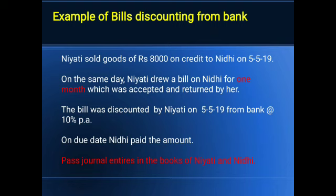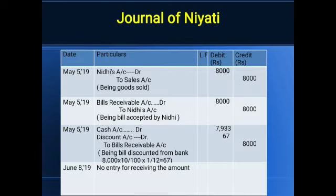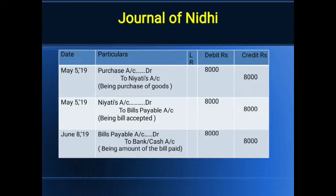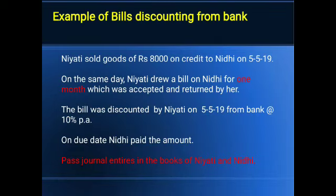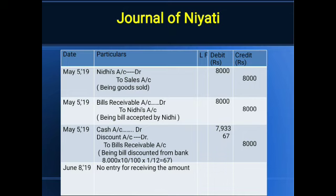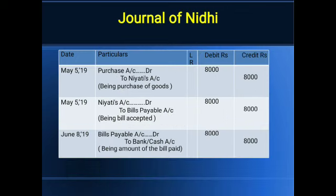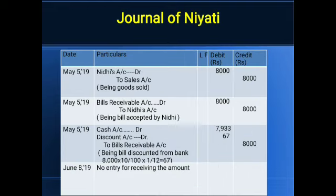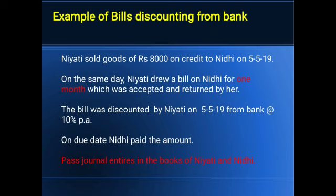The first entry remains the same: Niyati sold the goods — selling entry in Niyati's books and purchase entry in Nidhi's books. We are not changing the first entry. The second entry is also the same: on the same day, Niyati draws the bill for one month and Nidhi accepted and returned it. Bill Receivable to Nidhi in Niyati's books, and Niyati to Bills Payable in Nidhi's books. No new entry is passed yet — up to the writing of the bill, no discounting entry is charged.